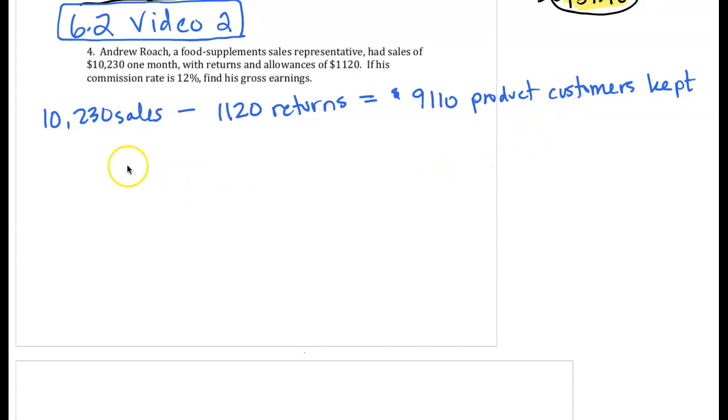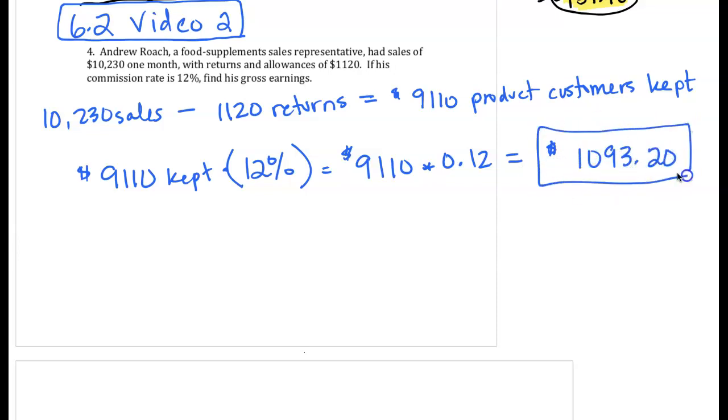For our commission, we're going to take that $9,110 in sales that customers kept and multiply that by 12%, which is $9,110 times 0.12. Multiplying those together is $1,093.20. That is Andrew's commission or his gross earnings.